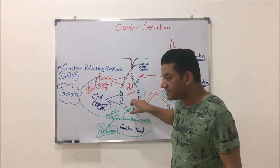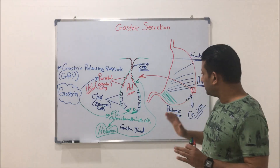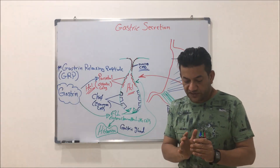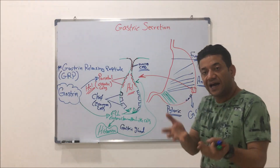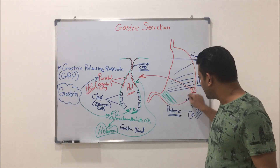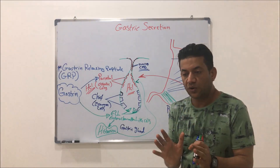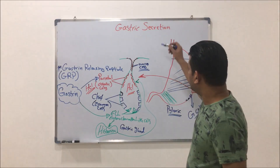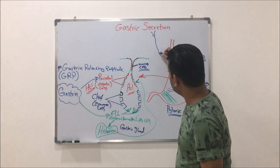During the gastric phase, when food enters the stomach, the food will press on the walls of the stomach because of distention of the stomach. This pressing of food during the gastric phase on the wall of the stomach will stimulate the nerve endings, and also it will cause what is called a vagus nerve reflex.